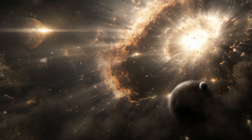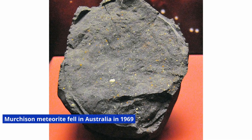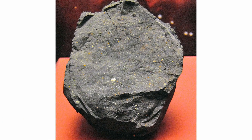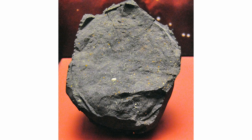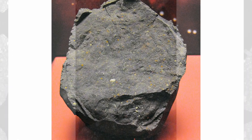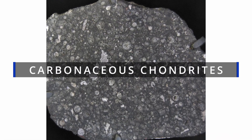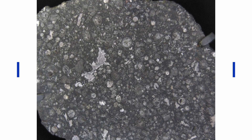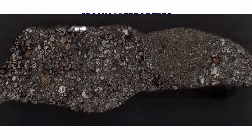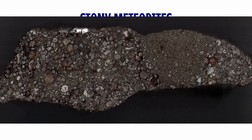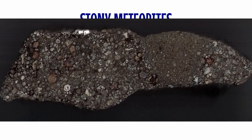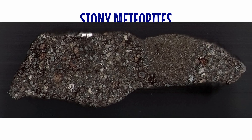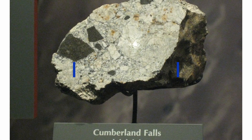Chondrites have been little changed compared with rocks from larger planets, which have been subjected to geological activity, so they can tell us a lot about how the solar system formed. The Murchison meteorite, which fell in Australia in 1969, is a chondrite — it also smells a bit like Brussels sprouts. The most basic types, known as carbonaceous chondrites, are rich in water, sulfur, and organic material. They are thought to have brought volatile material to Earth when it was newly formed, helping to establish the atmosphere and other conditions required to sustain life.